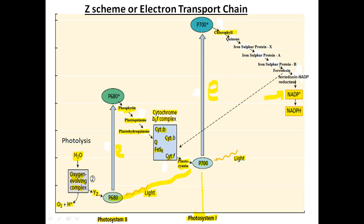The electrons ejected from photosystem 1 are received by chlorophyll, then transferred sequentially to quinone, iron-sulfur protein X (FeSx), iron-sulfur protein A (FeSA), and iron-sulfur protein B (FeSB). The electrons are then transferred to ferredoxin, and from ferredoxin through FNR — which is the flavoprotein ferredoxin-NADP reductase — these electrons are finally received by NADP, reducing it to NADPH.